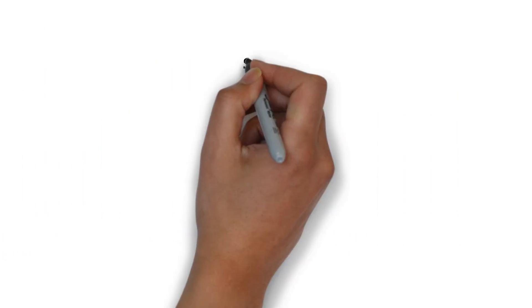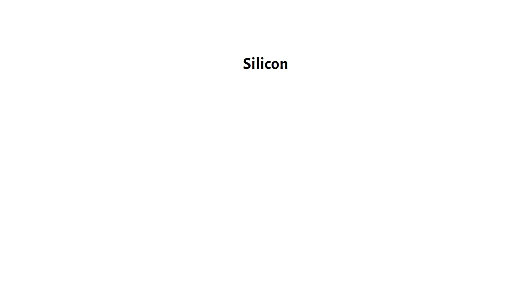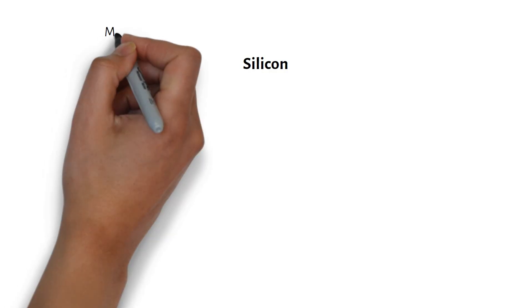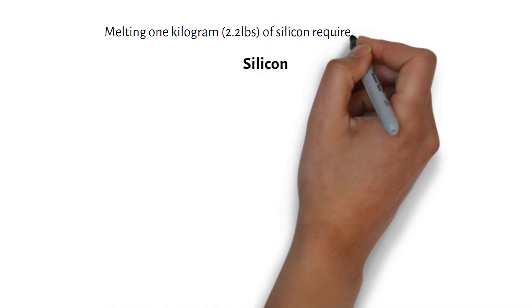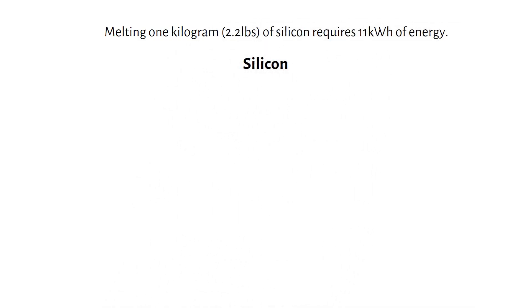All solar panels are mainly made of silicon, which is essentially purified sand. It's one of the most abundant raw materials on earth, so there's no shortage anytime soon. But melting 1kg, about 2.2 pounds of silicon, requires 11kWh of energy.